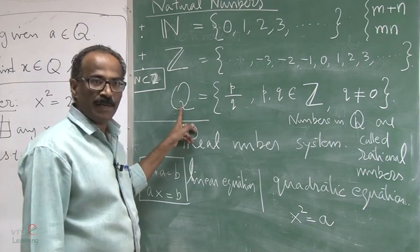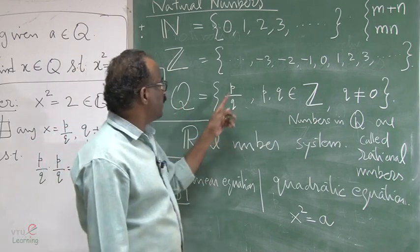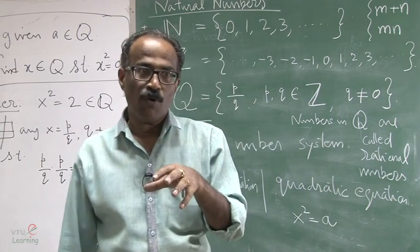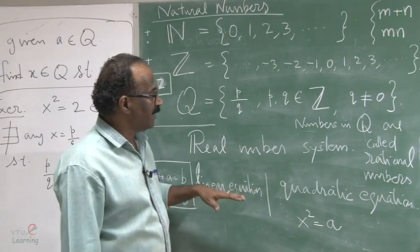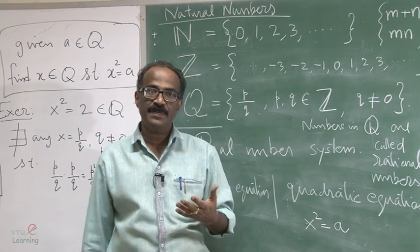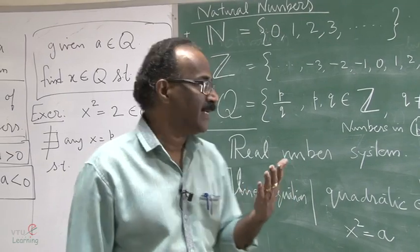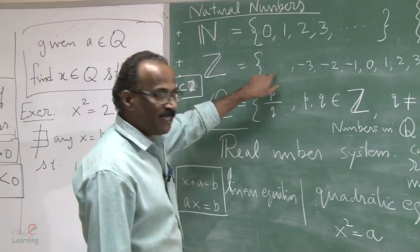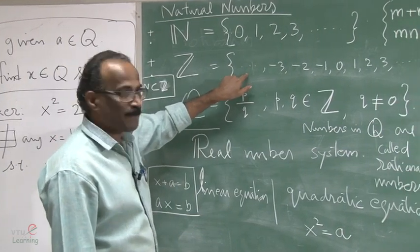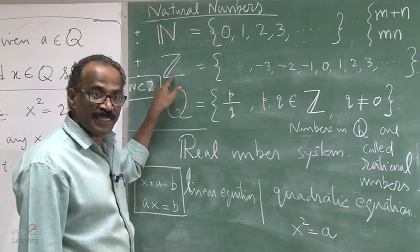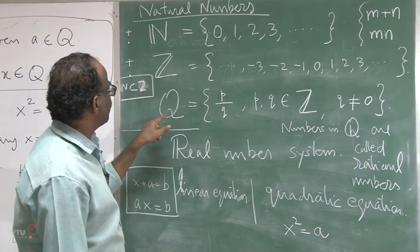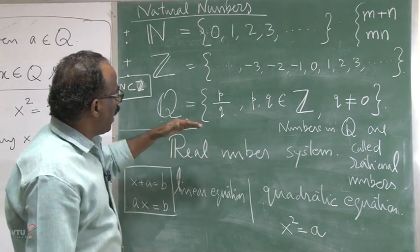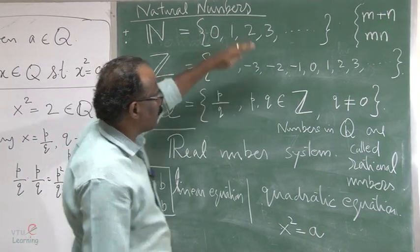In that process we introduced a new number system called the rational number system. We introduced a collection of objects with algebraic concepts — mainly addition and multiplication. When we came to division, we saw that the space Z, the set of integers, was inadequate, and so we defined the rational number system Q.